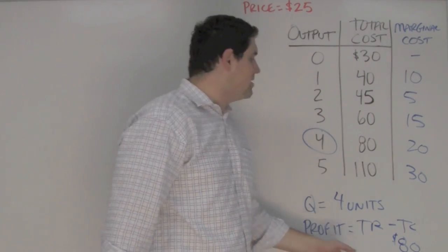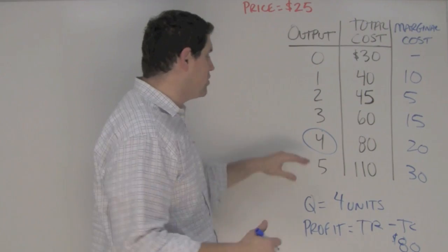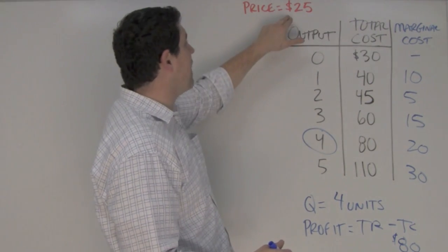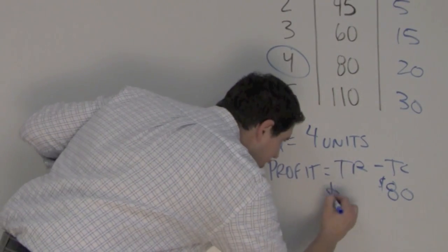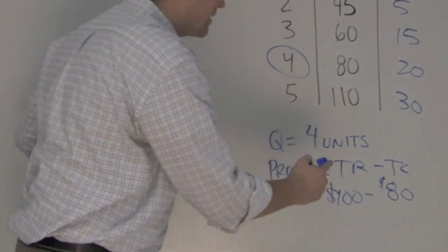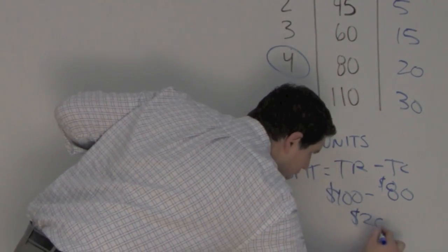The total revenue is the amount of money coming in. Well we produce four units, we sell them for $25 each. That means total revenue must be $100. You subtract that out and you get $20. $20 profit.